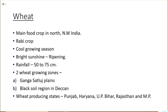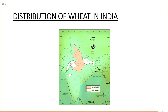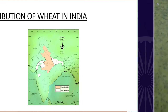Wheat is the most important staple food crop in the northern part of India. It is a Rabi crop — Rabi crops require less rainfall and are grown between September to December. They require a cool growing season and bright sunshine when the crop is ripening, with 50 to 75 cm of rainfall. There are two major wheat growing zones: the Ganga-Sutlej plains and the black soil region of the Deccan in southern India. On screen is the map showing the distribution of wheat.